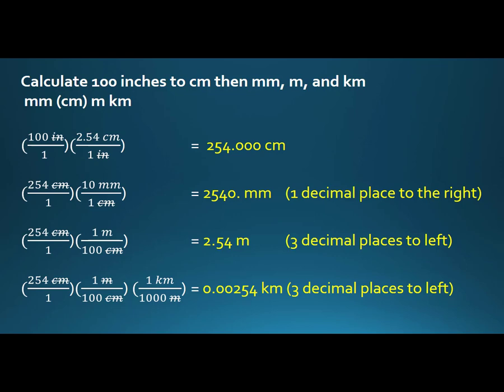Let's do something that I intentionally made to come out to an even number. Calculate 100 inches to centimeters, then to millimeters, meters, and kilometers. Millimeters is one thousandth of a meter, and kilometers is one thousand times a meter, but centimeters — we have 100 centimeters in a meter and 10 millimeters in a centimeter.